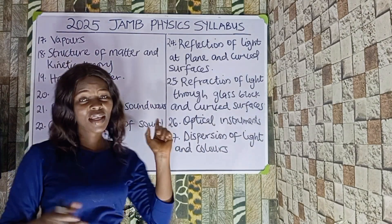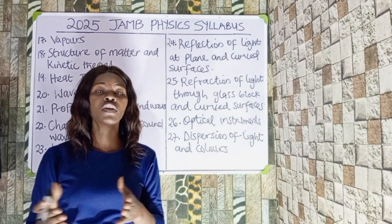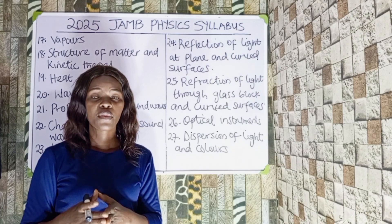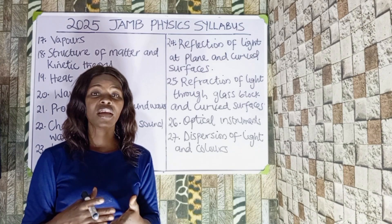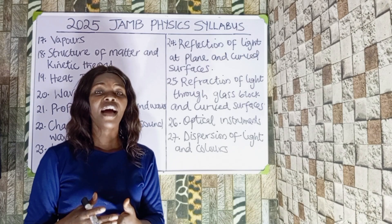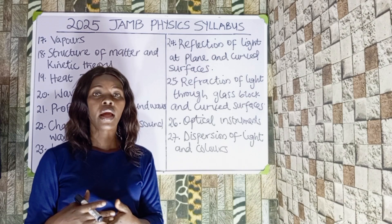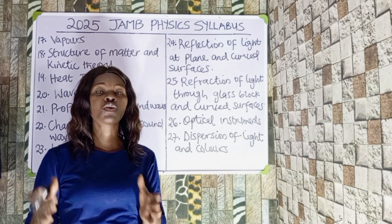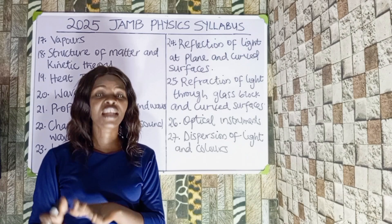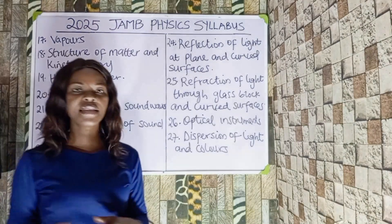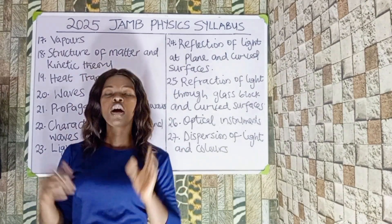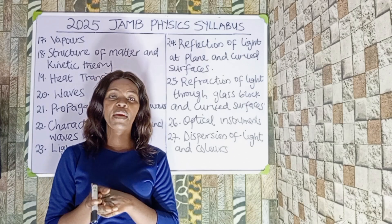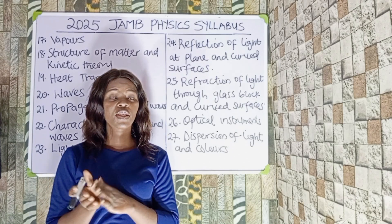Under refraction we should also look into lenses. We have two types of lenses: the concave lens and the convex lens. You should know how to draw image formation by a concave and a convex lens and how to solve problems associated with them. Next is optical instruments — we'll be looking at the camera, the human eye, and the telescope.